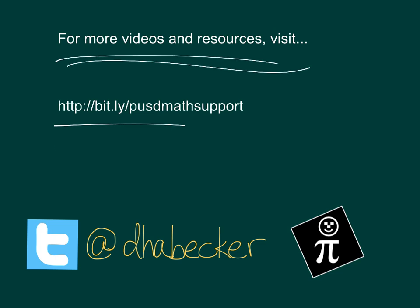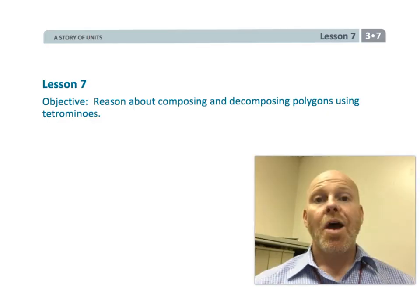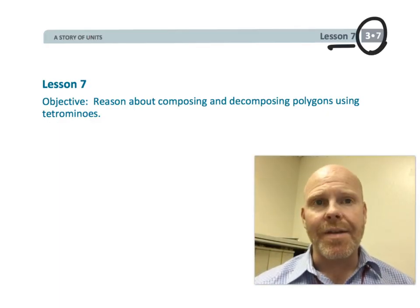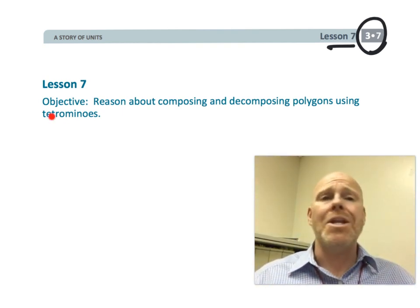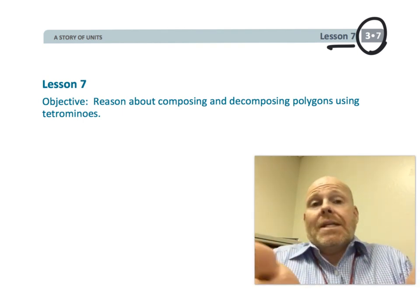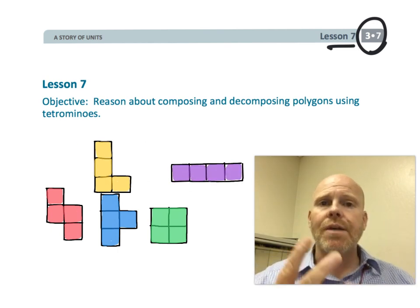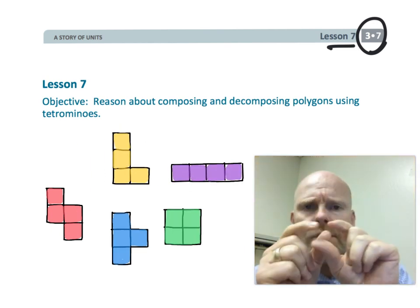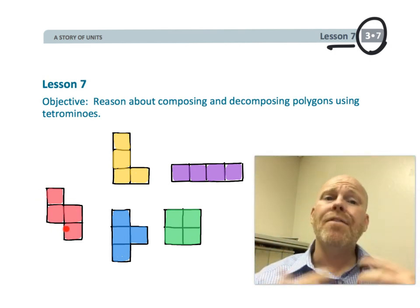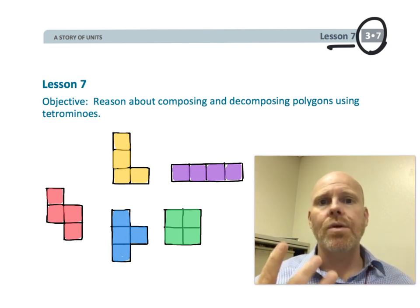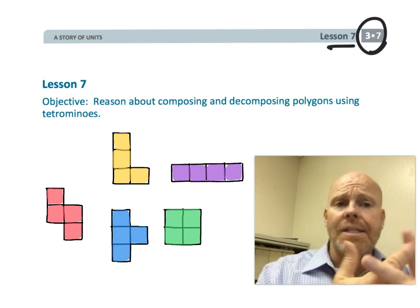This is third grade module 7 lesson 7. In this lesson students are going to be taking these tetrominoes. Now what is a tetromino? These five figures are created each using four centimeter or unit squares. So the idea is you take four unit squares and you find all the different ways you can arrange those four squares where they're always sharing a complete side, and these are the five shapes that are possible.